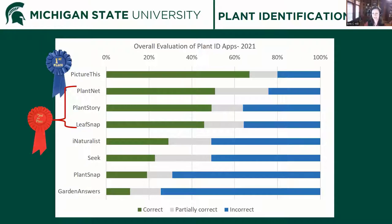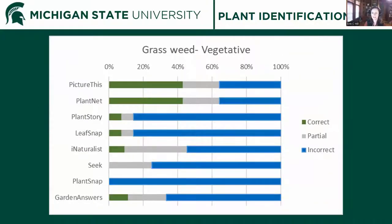With so many data points, we can also dissect results by plant type. For vegetative grassy weeds, the apps separate even further. Just like a person would have a hard time identifying a grass because you need to inspect features around the collar region or the flowers, the apps also struggle — they're working from one still photo that probably doesn't show those features well. Even our best apps in this category, PictureThis and PlantNet, had less than 50% accuracy for vegetative grassy weeds, while all other six apps were at 10% or less accuracy.